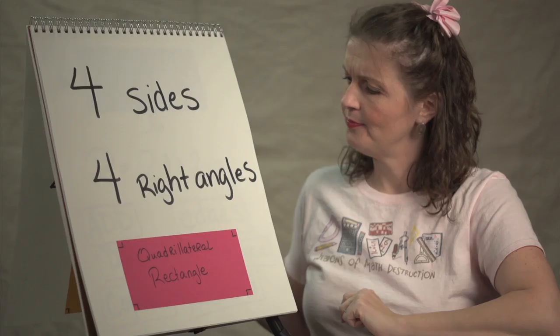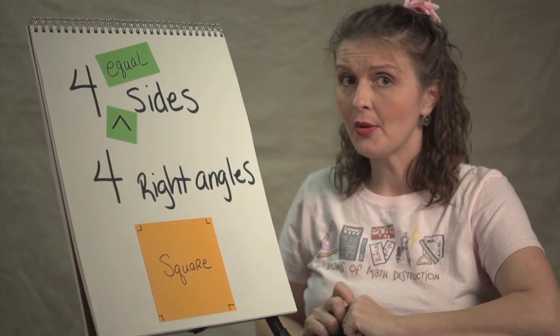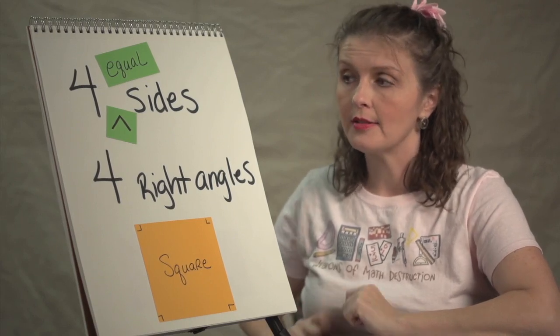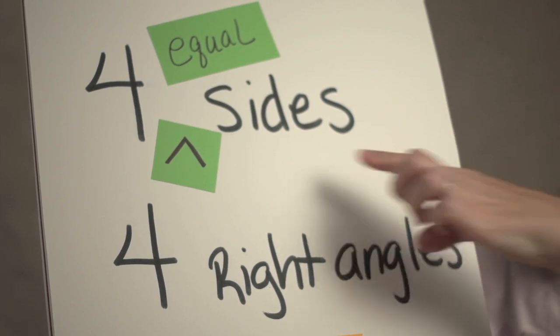A square also has four sides and four right angles, but it has one more requirement. Those sides have to be equal.